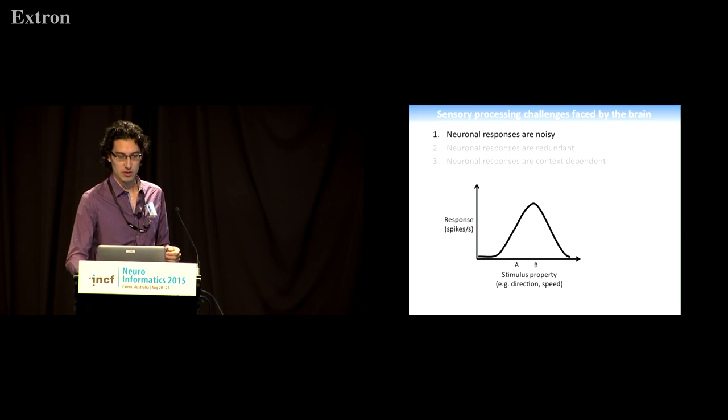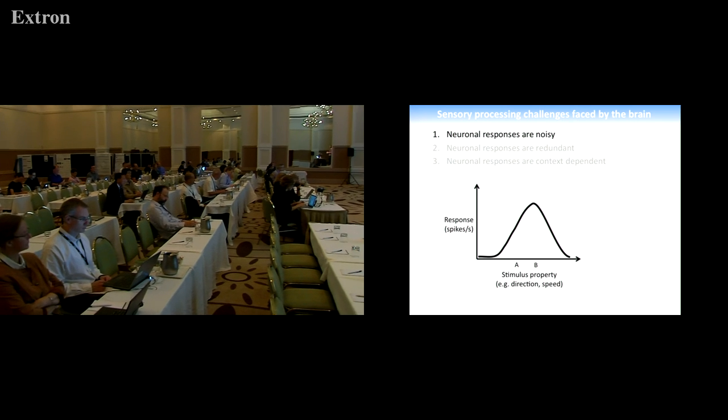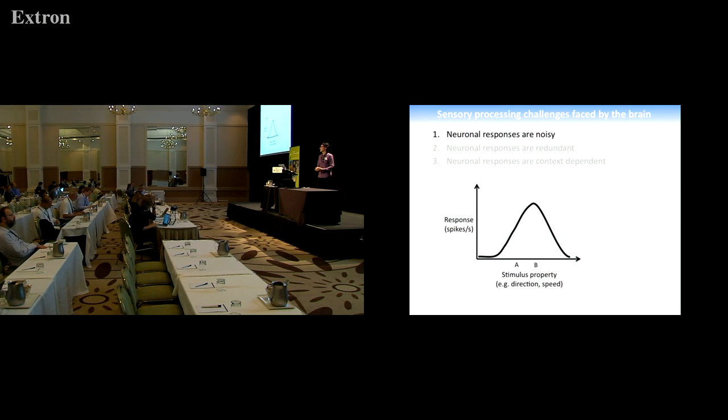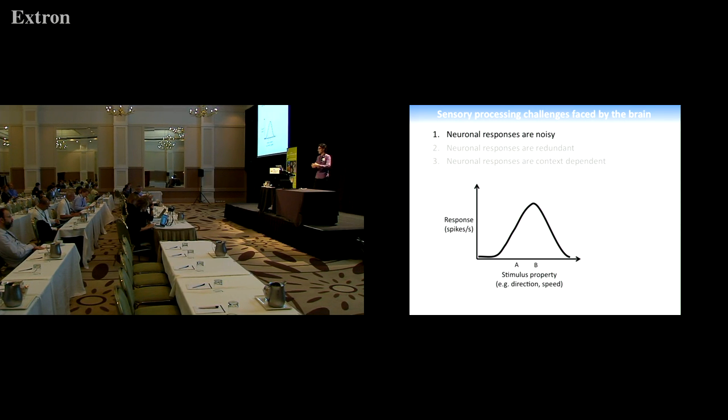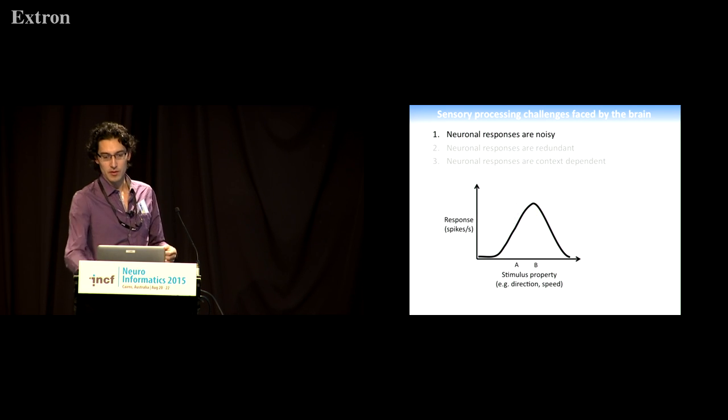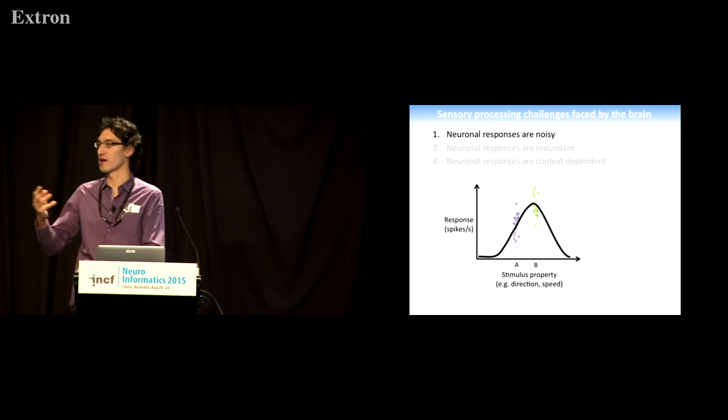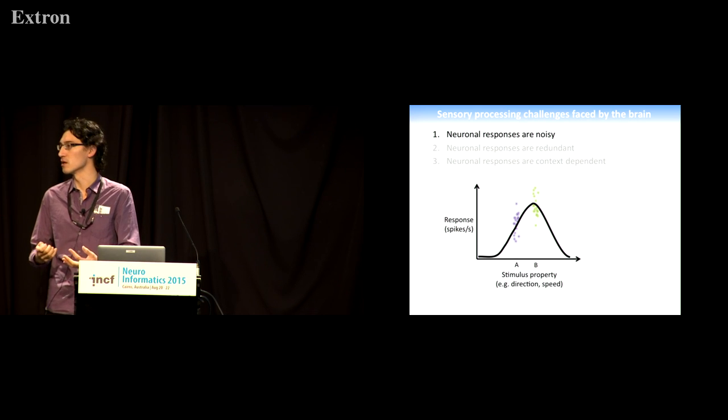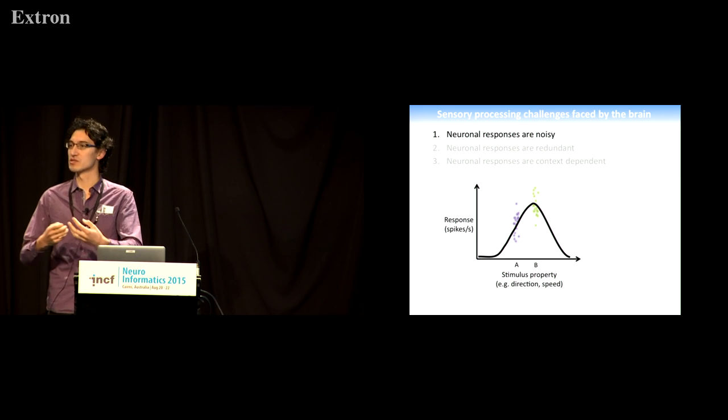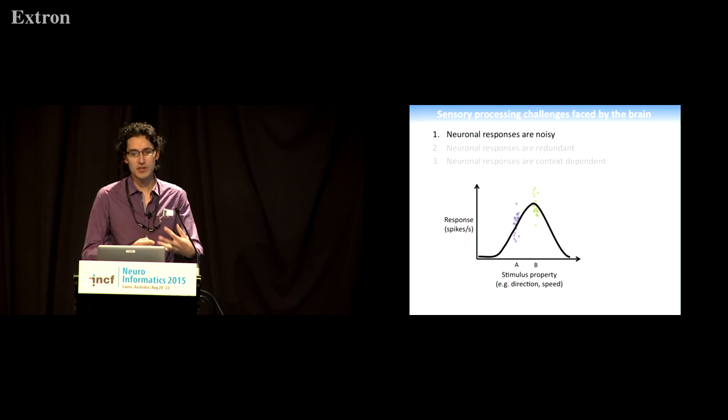The first major problem is that individual neurons are noisy. If we look at sensory systems, on average they have really nice smooth tuning curves like this, showing a neuron encoding direction or speed of motion. But the responses to individual trials or repetitions of a single stimulus are really variable. I'm showing the scatter of responses if we repeated two stimuli A and B, and given the response of one neuron on a single trial, it's impossible to say whether stimulus A or B occurred even if you knew it was just those two stimuli.